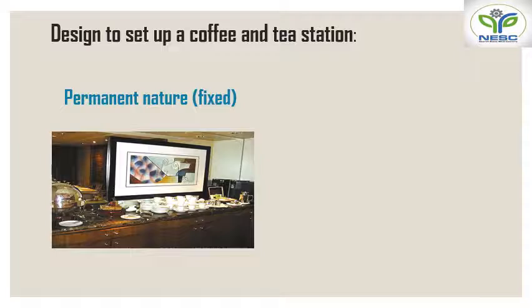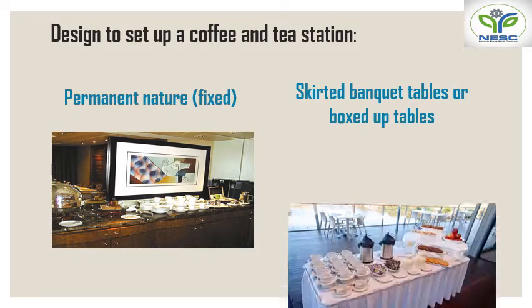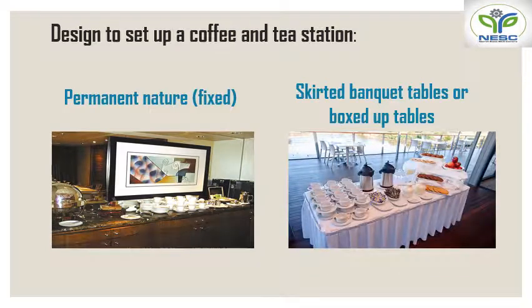Depending on the type of function or the number of guests, you have to pre-arrange the saucers, coffee cups, linen, and other contents. The second type is carted banquet tables or boxed-up tables — here you carry the tables to the particular place, cover them with a banquet cloth, and then lay the crockeries and cutleries in order.